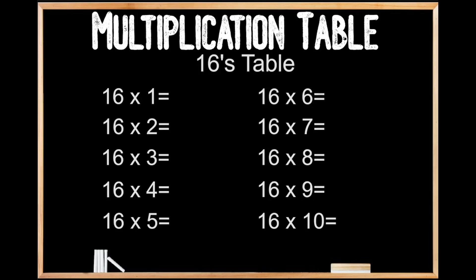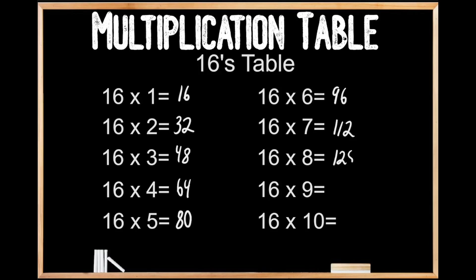16's table. 16 times 4 is 64. 16 times 5 is 80. 16 times 6 is 96. 16 times 7 is 112. 16 times 8 is 128. 16 times 9 is 144. And 16 times 10 is 160.